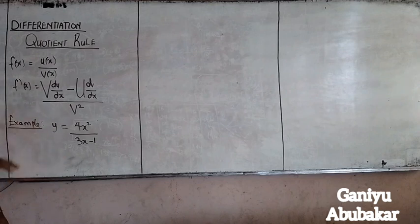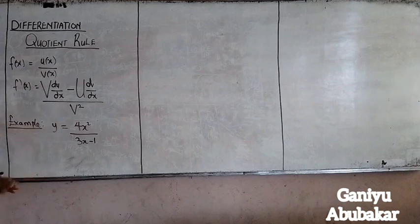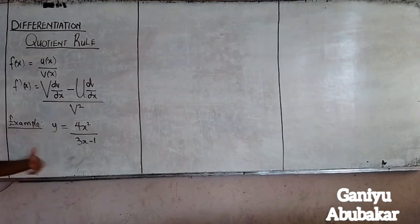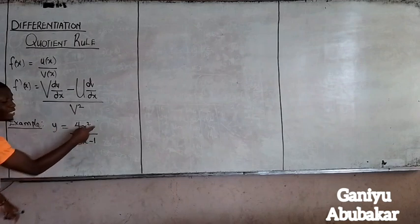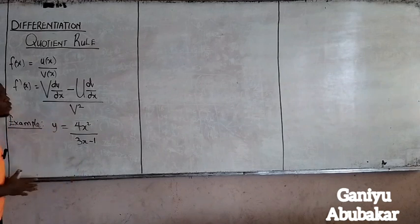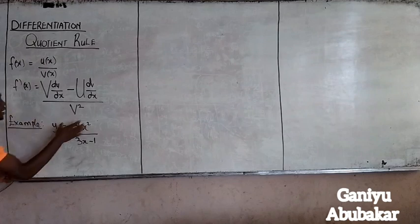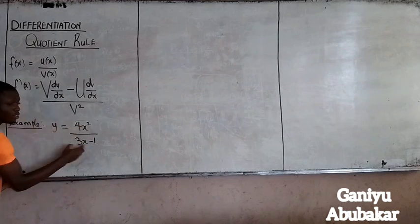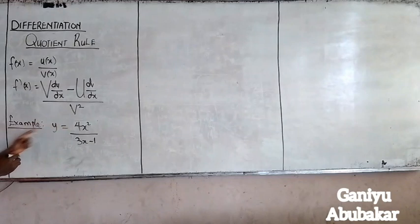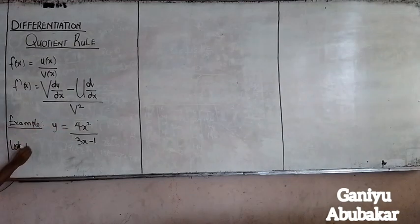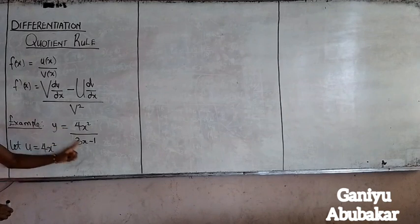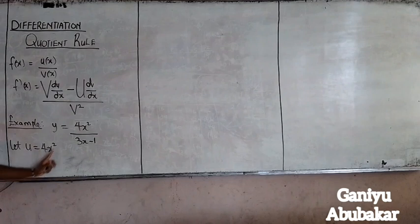I told you in a previous class that differentiation is actually straightforward, but integration is not. So for differentiation, with a question like this, I know that we apply the Quotient Rule — because they are dividing each other. How do you solve this? What are the first steps? First, call the numerator u and the denominator v. So let u be equal to 4x squared.